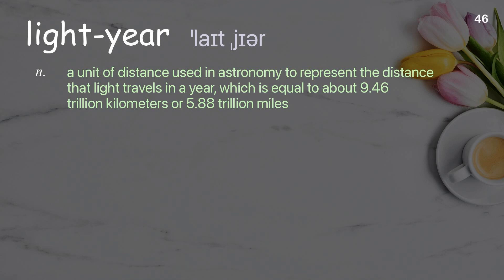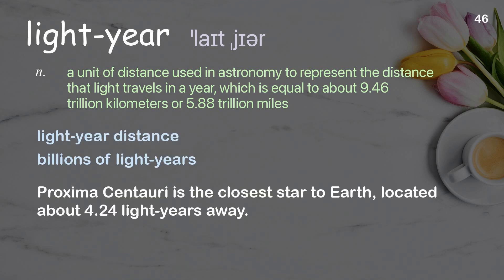Light year: a unit of distance used in astronomy to represent the distance that light travels in a year, which is equal to about 9.46 trillion kilometers or 5.88 trillion miles. Examples: light year distance, billions of light years. Proxima Centauri is the closest star to Earth, located about 4.24 light years away.